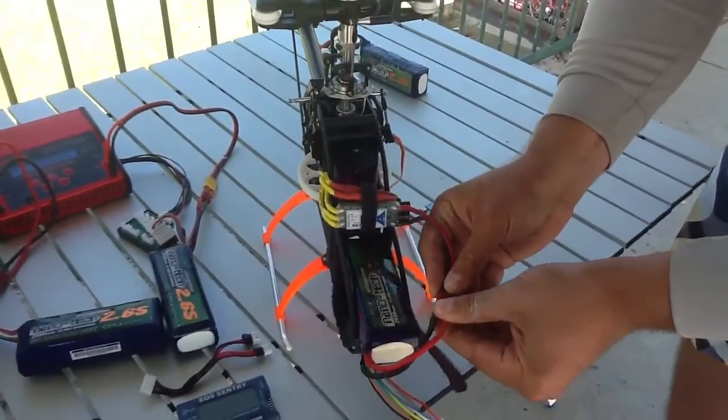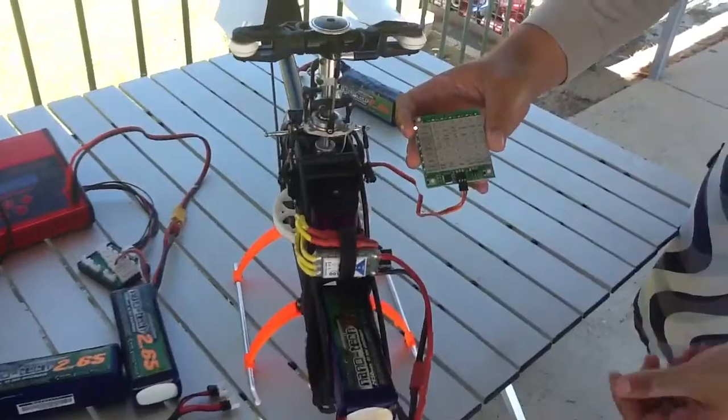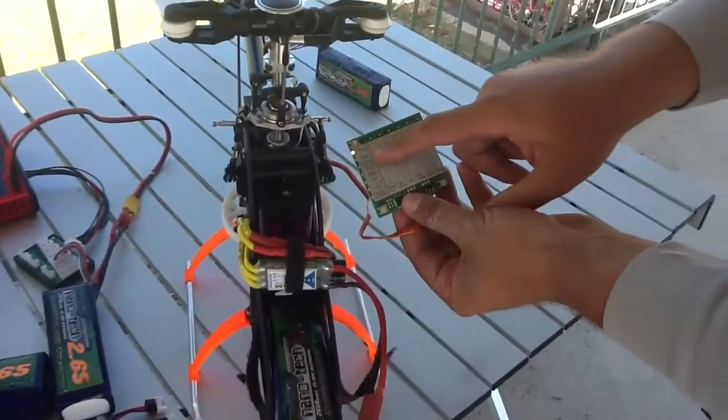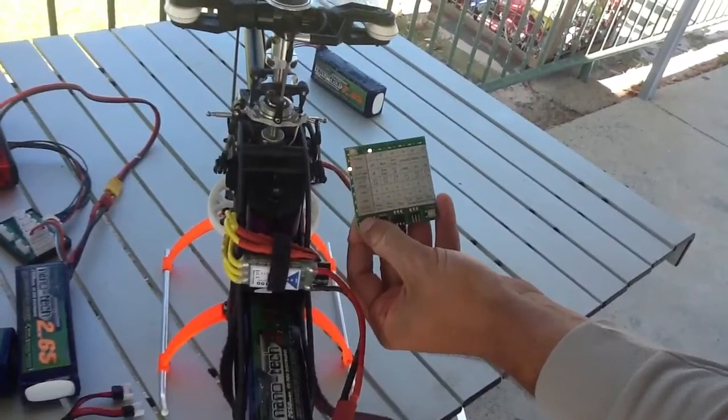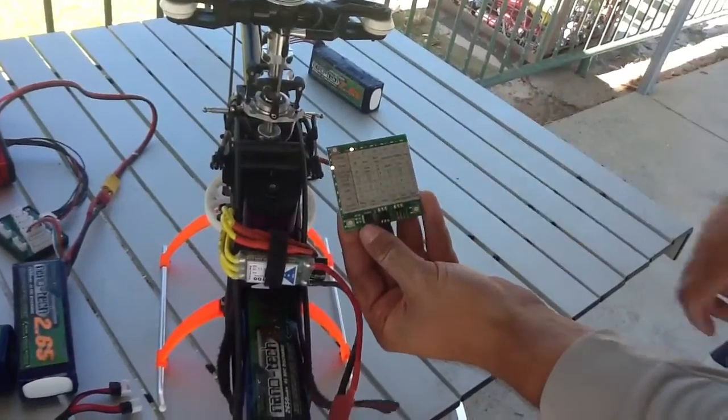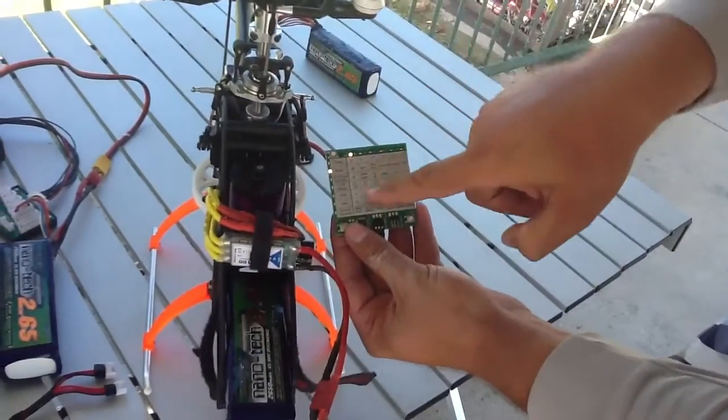So you plug the battery in. It makes a couple of tones for you, and the first setting it goes to is your timing. I'm using auto-timing on this for now, and you push the bottom left-hand button to go down, and you push the top one to cycle through the options.